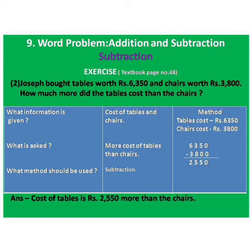Method madhe tables chi cost leha, chairs chi cost leha. Tables chi cost Rs. 6,350 and chairs chi cost aahe Rs. 3,800. Then make subtraction. Subtract 3,800 from 6,350. The answer is 2,550.